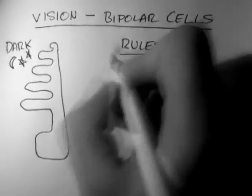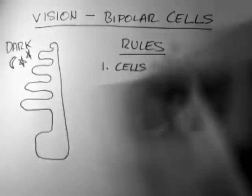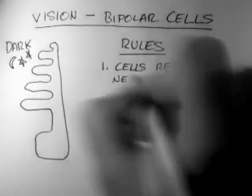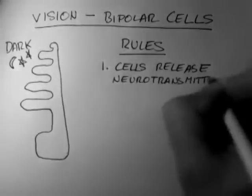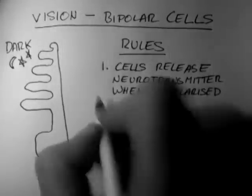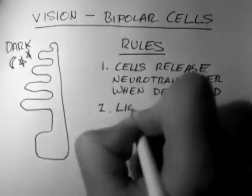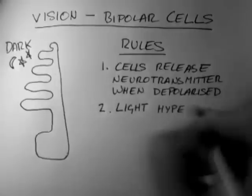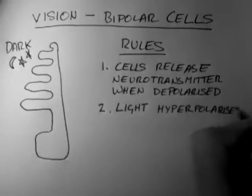Okay, so let's look at our rules again. The first rule is that cells release neurotransmitter when depolarised. And the second rule is that light hyperpolarises photoreceptors.